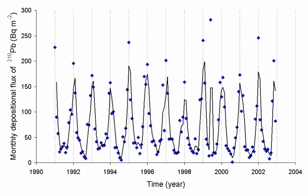220 Rn has a half-life of 55.6 seconds and also emits alpha radiation. Similarly, 219 Rn is derived from the most stable isotope of actinium, 227 Ac, named actinon, and is an alpha emitter with a half-life of 3.96 seconds. No radon isotopes occur significantly in the neptunium-237 decay series, though a trace amount of the isotope 217 Rn is produced.